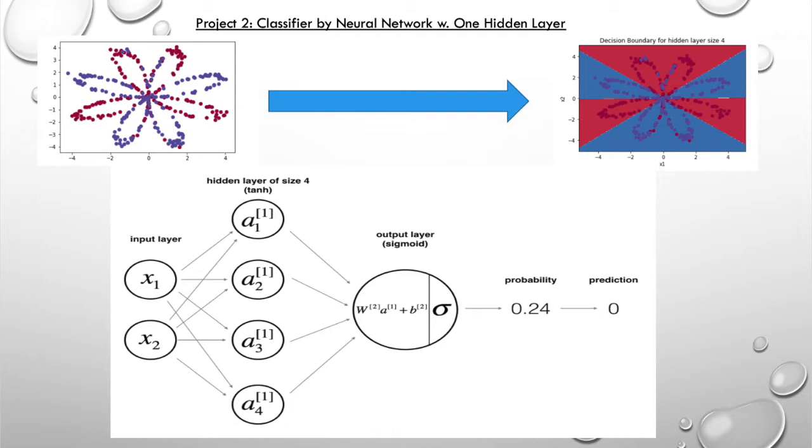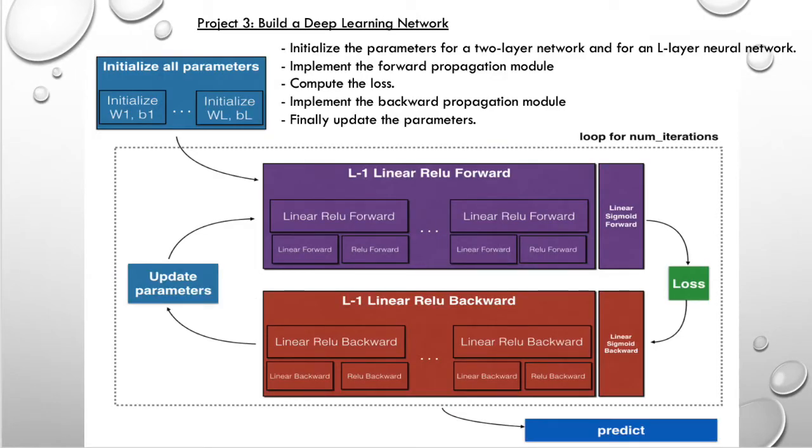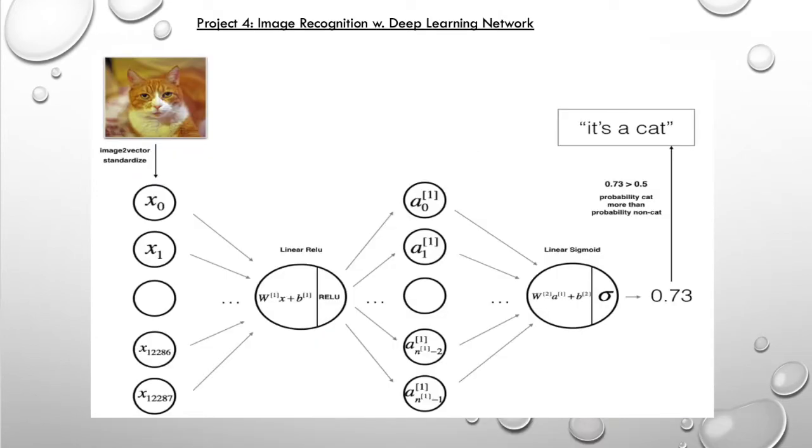In project 2, you will build a real and simplest neural network and use it to solve a classification problem. Project 3 takes you to build a deep learning network and use it in project 4 to solve the cat recognition problems again.